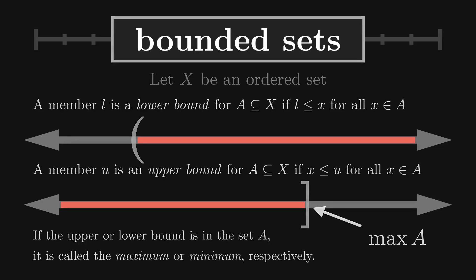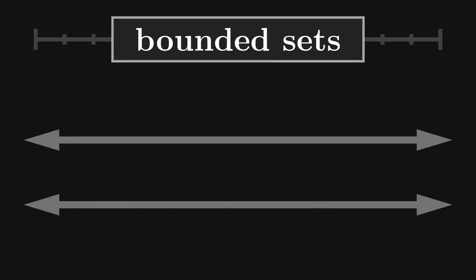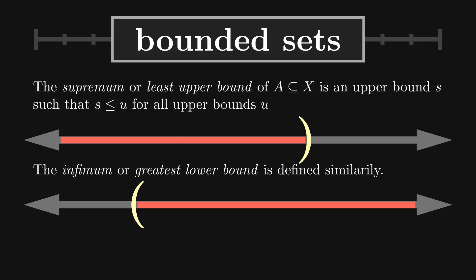But what about when a set is bounded and has no maximum or minimum? Well, we can still single out an element by defining the least upper bound, the supremum, and the greatest lower bound, the infimum.